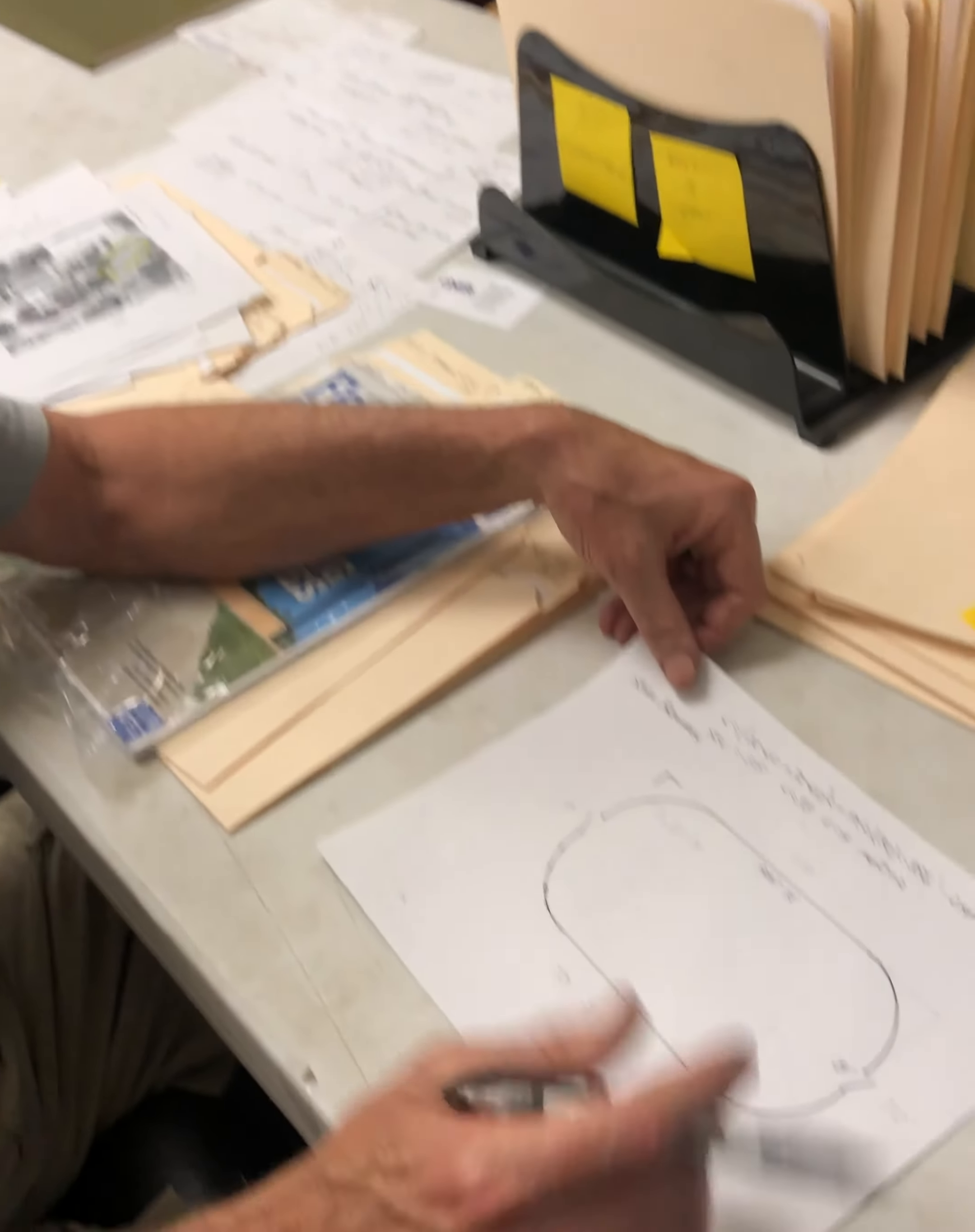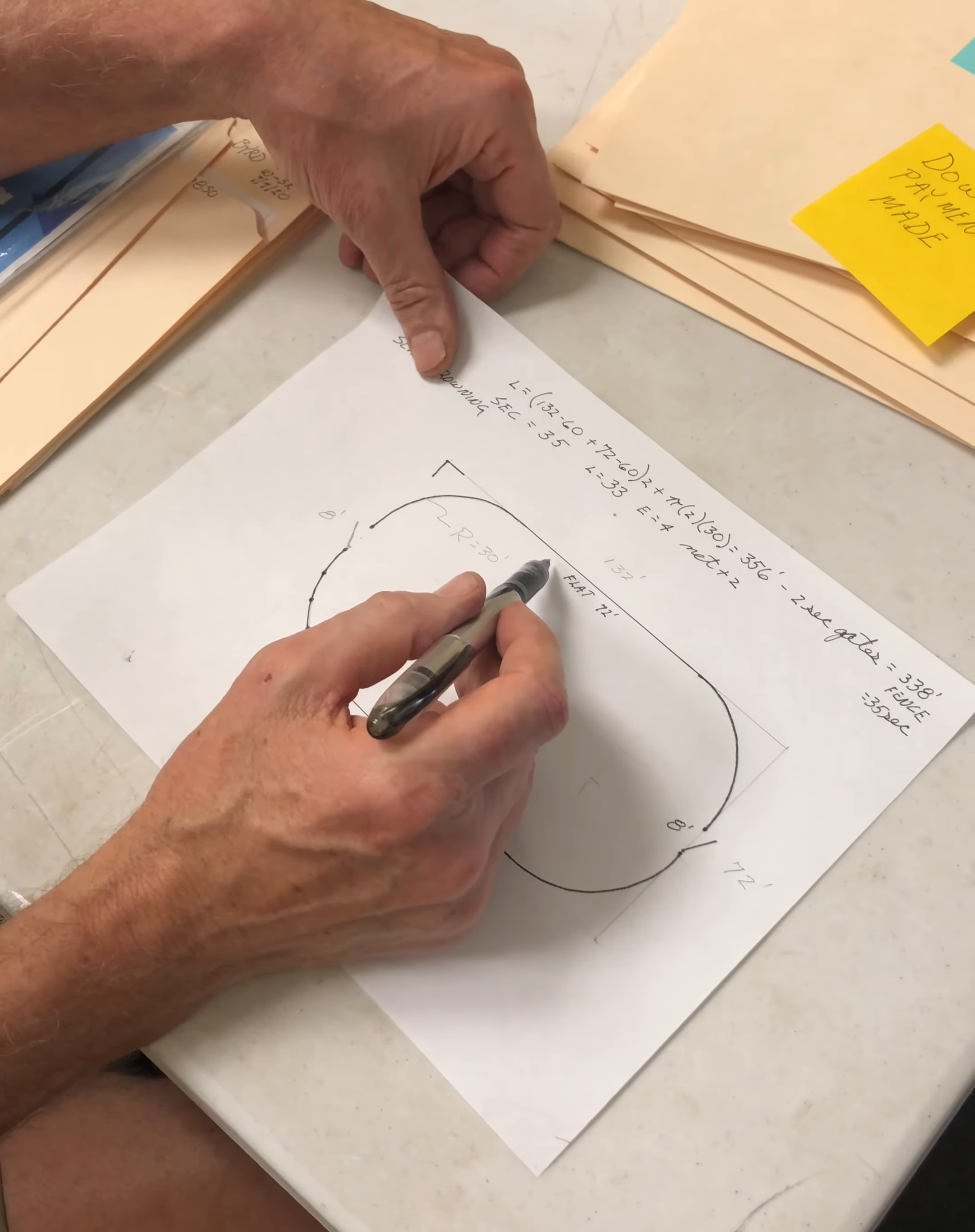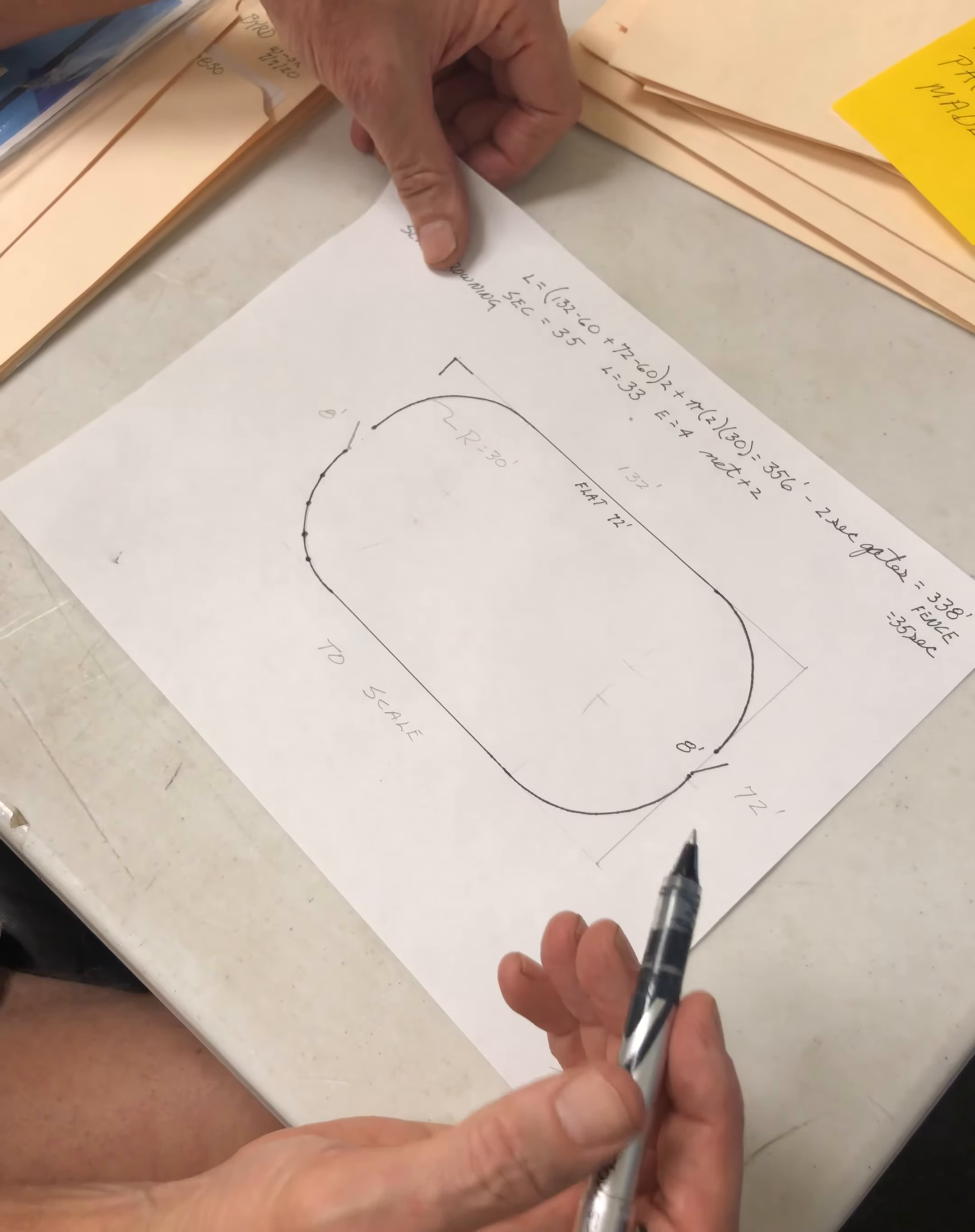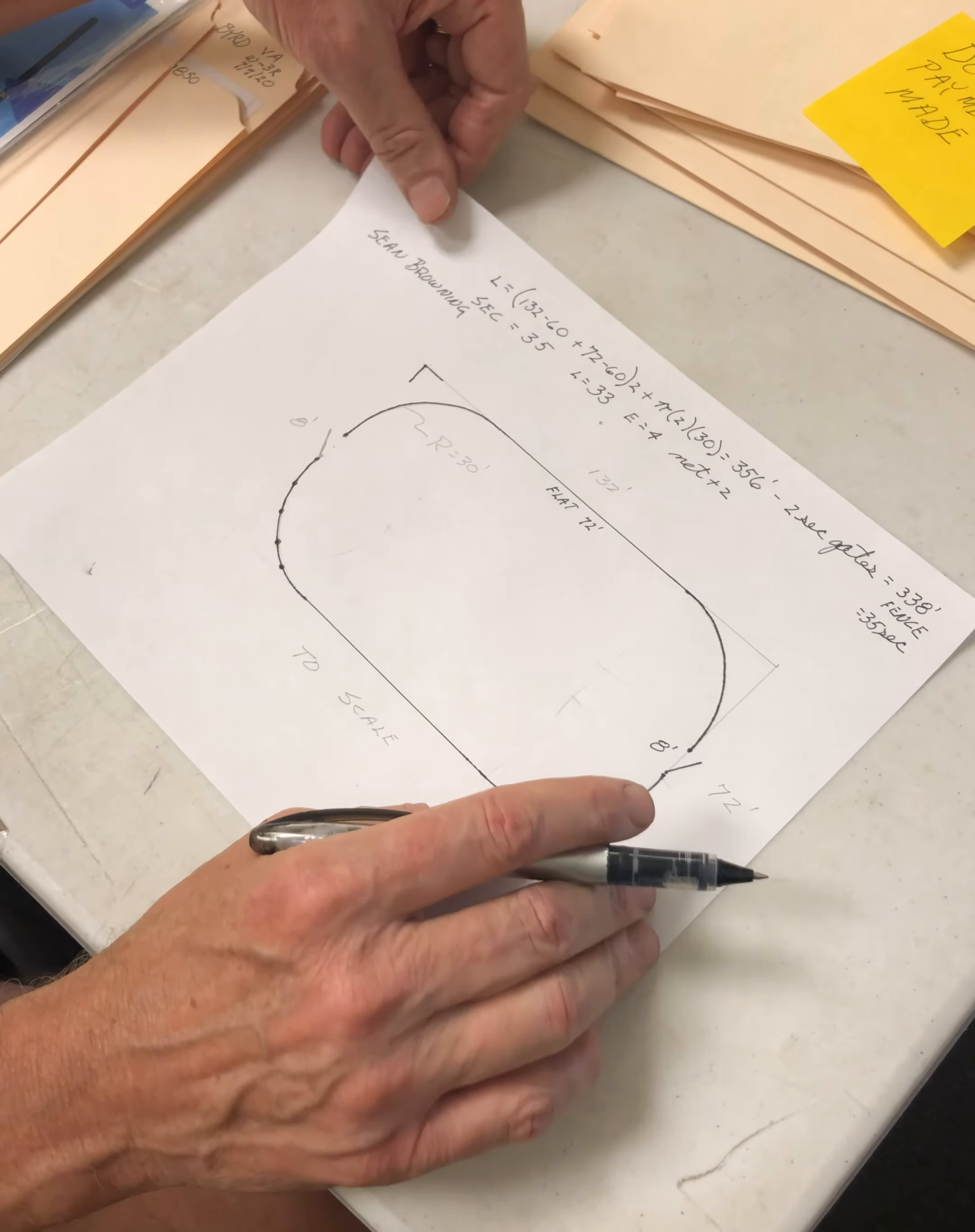The advantages of a radius system is number one you're going to save. On this arena they saved about eight hundred and fifty dollars worth of material and probably at least a couple hundred dollars worth of labor, so it was a thousand dollar savings to them.